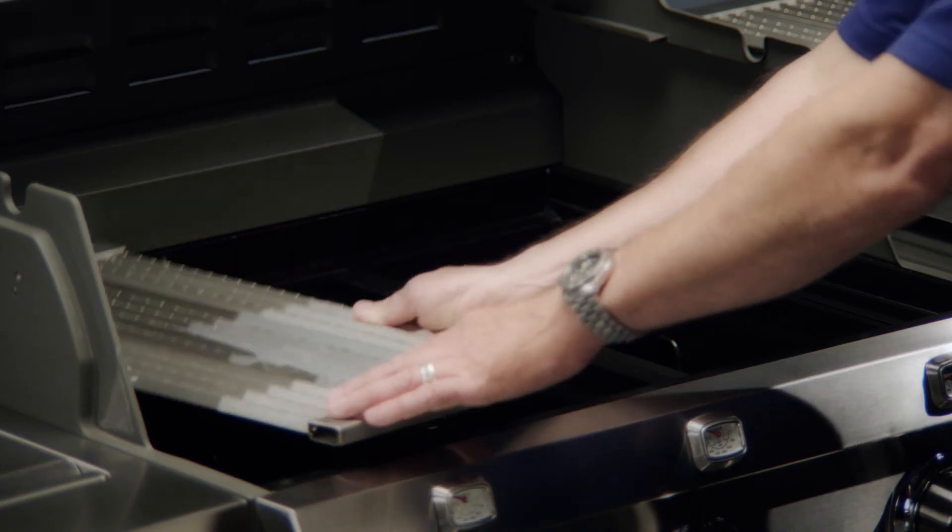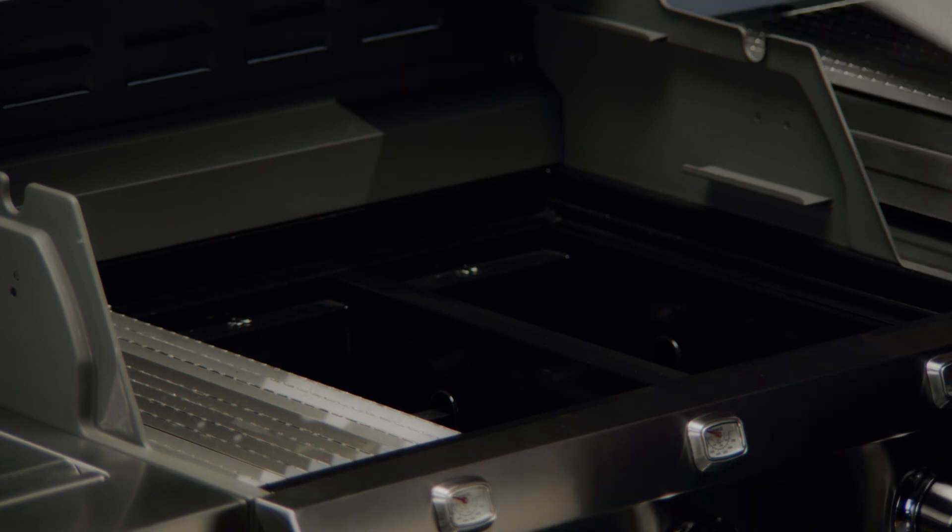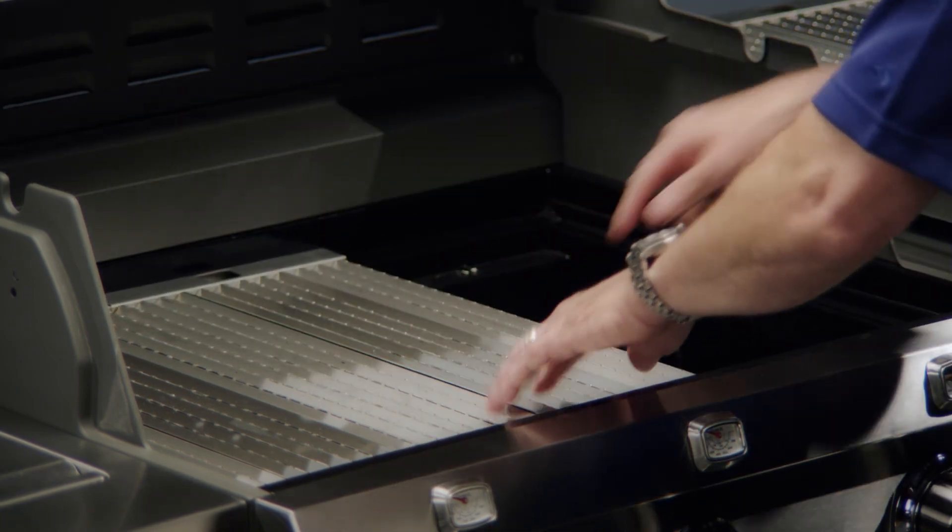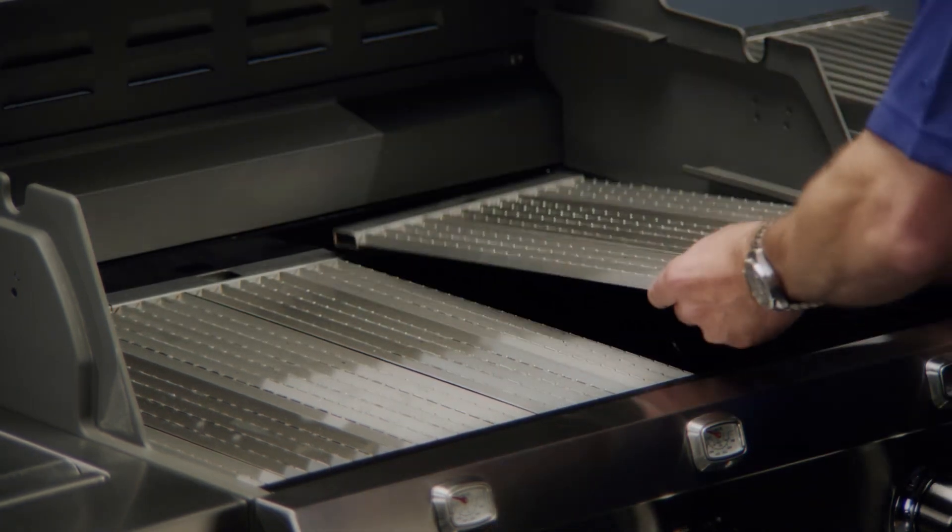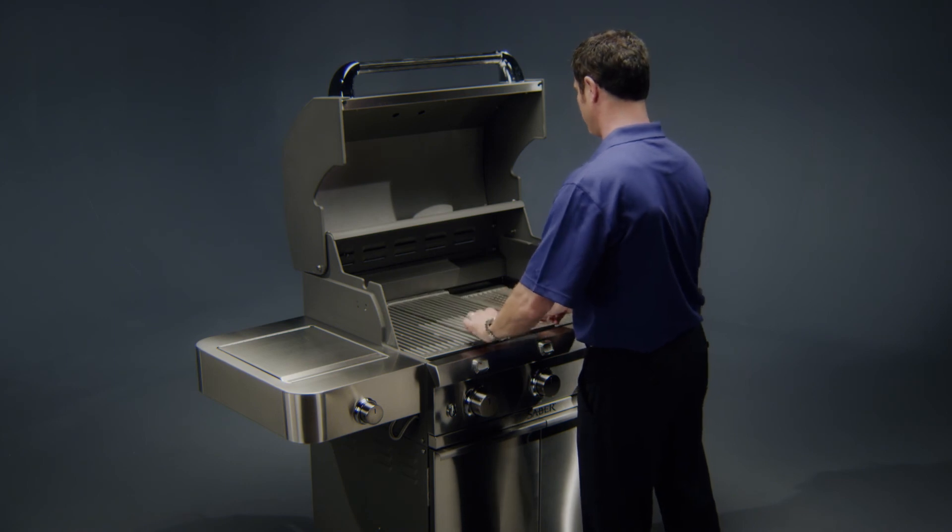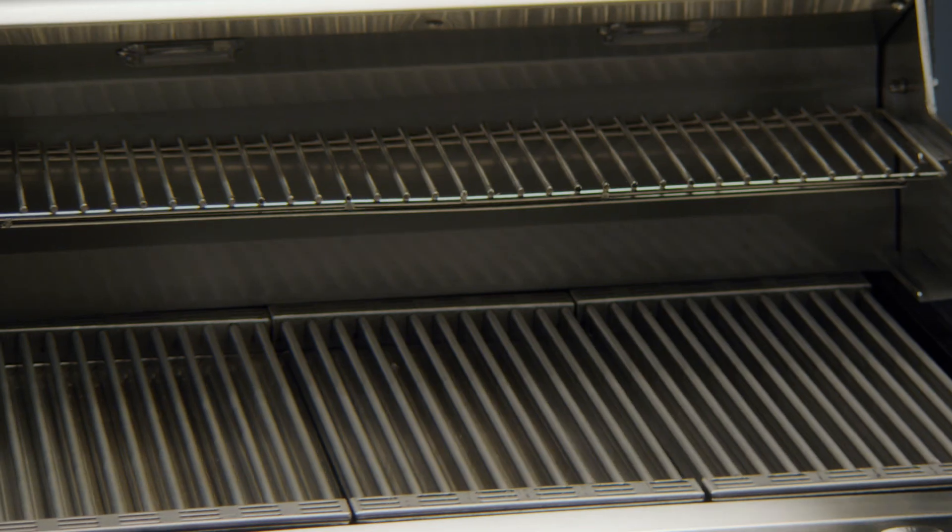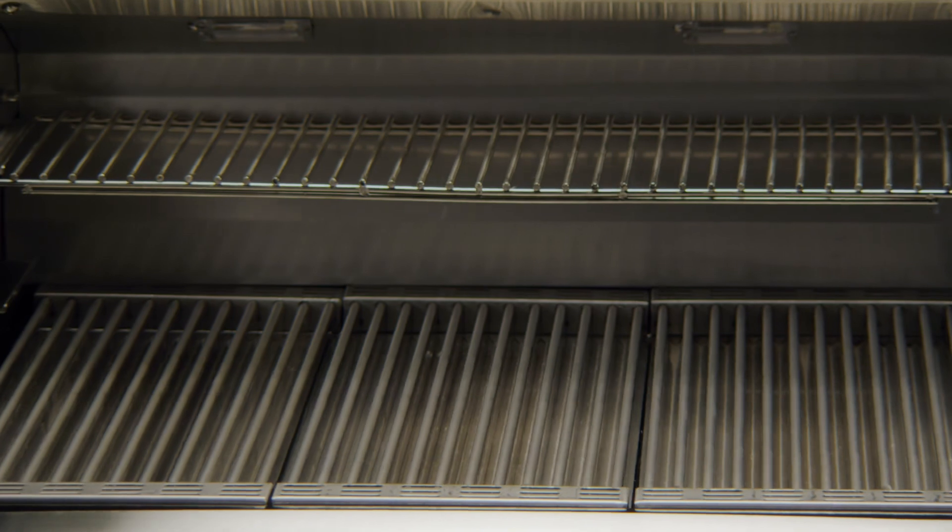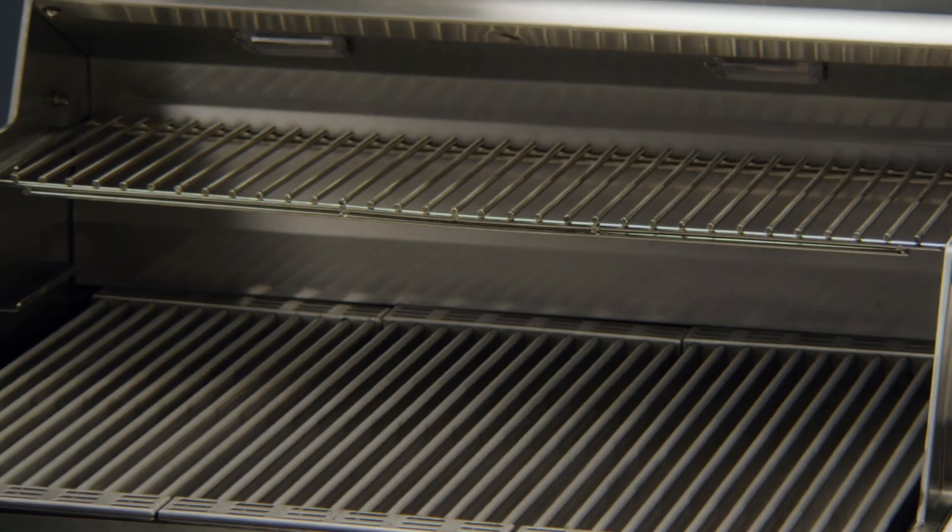Step 11. Replace the emitter plates, taking care to ensure that the peaks of the emitter plate with holes are facing up. Replace all cooking grates and the warming rack. The emitter holes should be located under the cooking grate bars when assembly is correct.